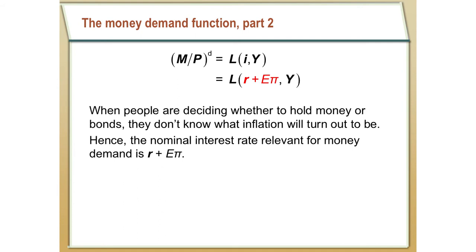When households are making decisions, they don't know what the rate of inflation is going to be, so they don't really know what the nominal interest rate will be in the future. Instead, we should substitute the definition of the nominal interest rate in for I, taking care to note that the expected inflation rate is the relevant inflation rate when making forward-looking decisions. The only rate of inflation we can use to make decisions about the future is the expected inflation rate.